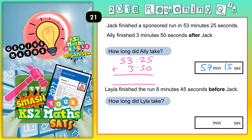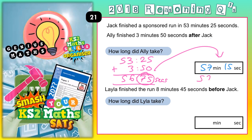Watch what happens: 5 and nothing is 5, 2 and 5 is 7, 3 and 3 is 6, 5 and nothing is 5. I've seen people just write that down — but remember, 56 minutes 75 seconds doesn't make sense, because 75 seconds is more than one whole minute. So you need to take out 60 seconds from that to make an extra minute.